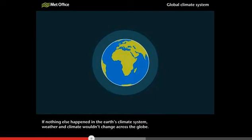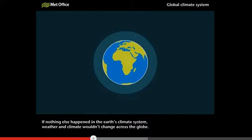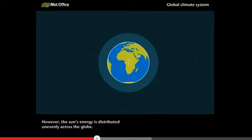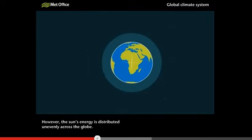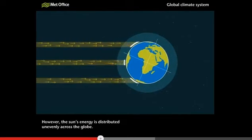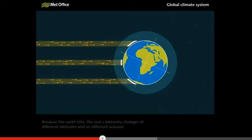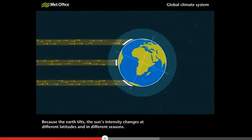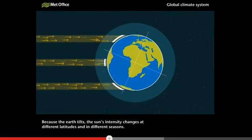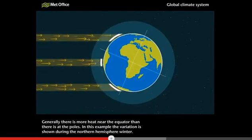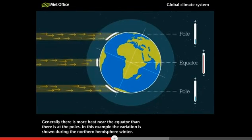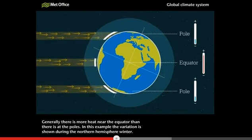If nothing else happened in the Earth's climate system, weather and climate wouldn't change across the globe. However, the Sun's energy is distributed unevenly across the globe. Because the Earth tilts, the Sun's intensity changes at different latitudes and in different seasons. Generally, there is more heat near the equator than there is at the poles.